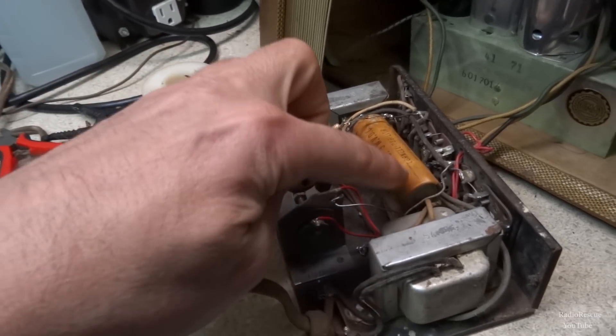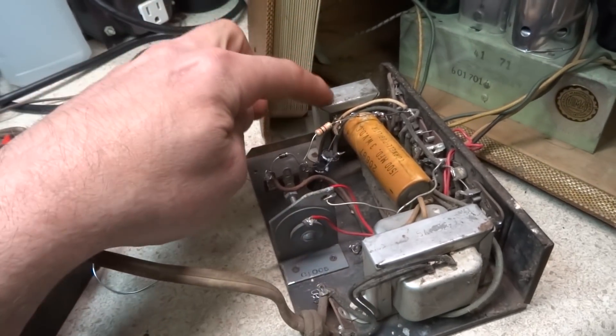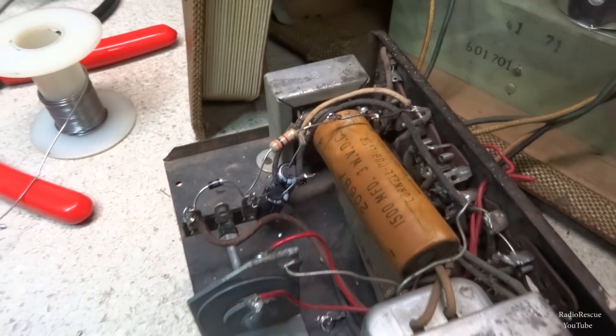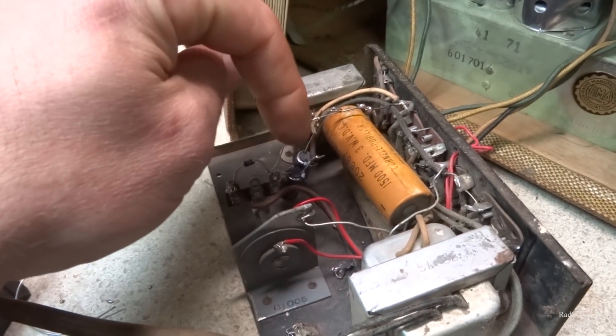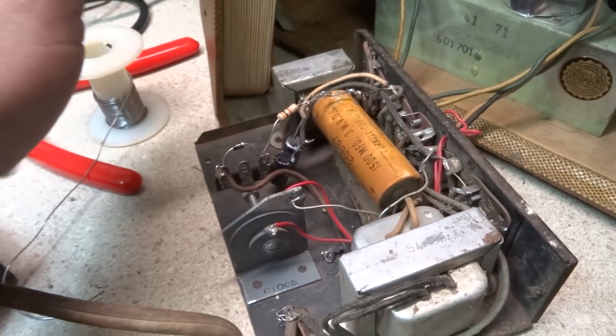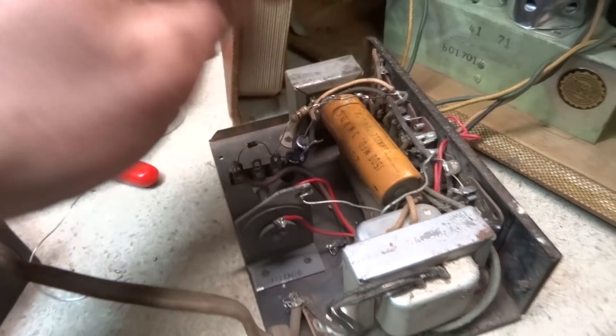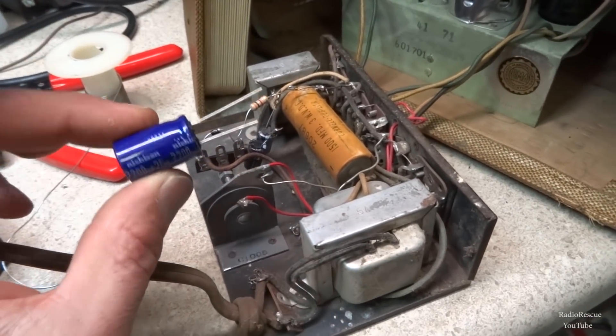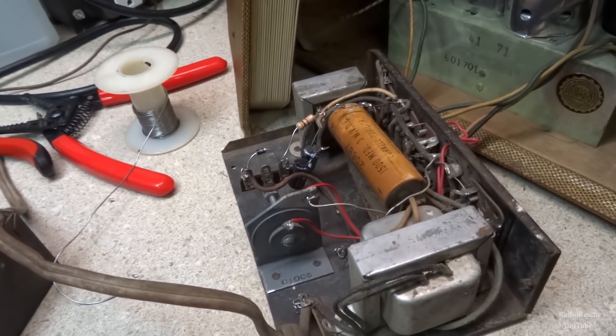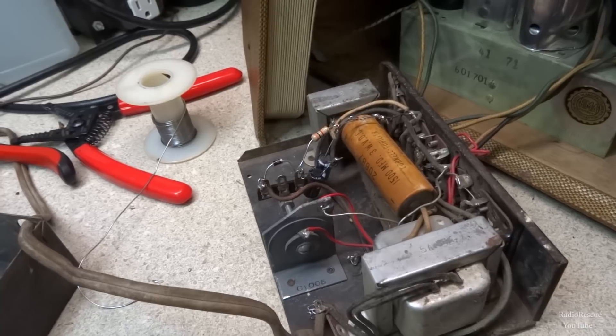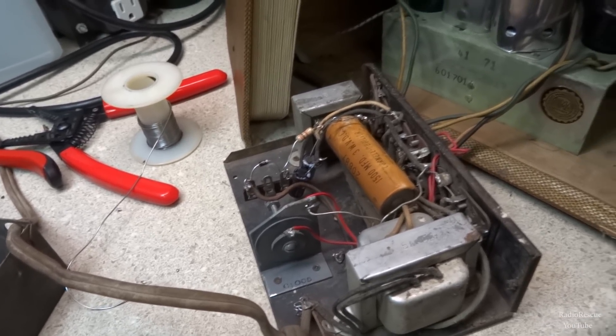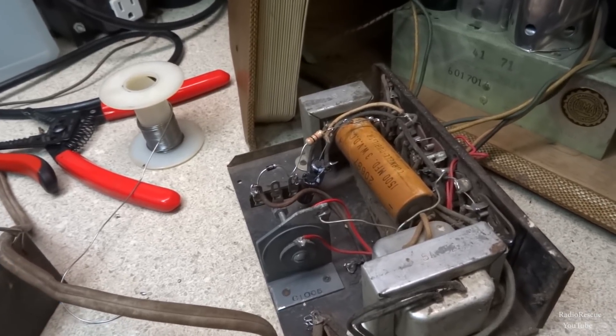Basically there's two different ones here. This is a filter choke here and they go from the filter choke to ground. We'll just have to tack some in here. It's going to be kind of difficult to use radial leaded. They're quite a bit smaller than these original ones. I like radial lead because you can use them on a lot of different applications, but in this case here it'd be a little bit easier if they were axial, but that's what I've got so that's what we're going to go with.